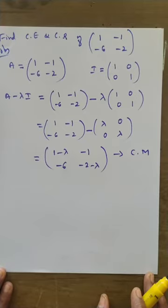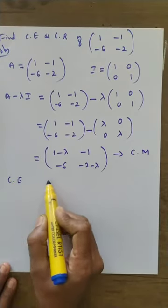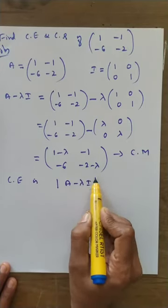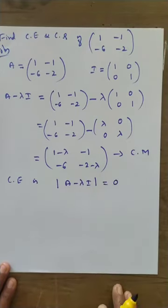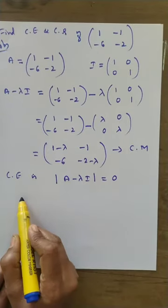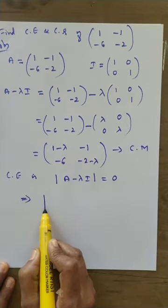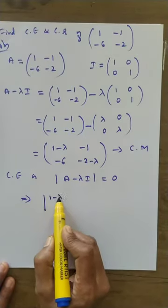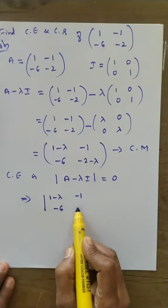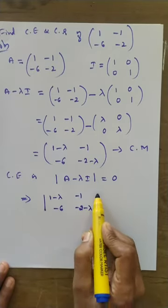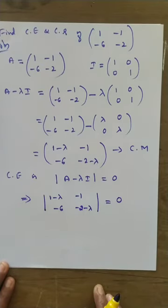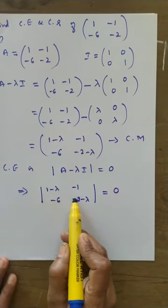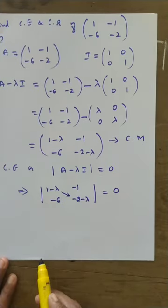Find the characteristic equation using the formula: determinant of A minus lambda I equals zero. The determinant of [1-lambda, -1; -6, -2-lambda] equals zero.